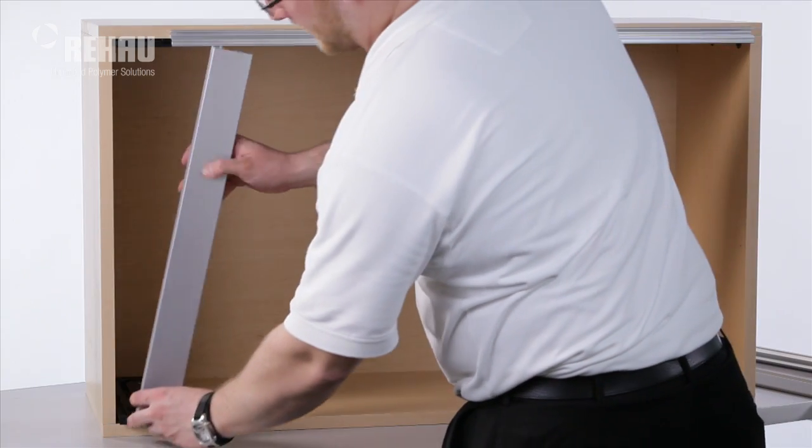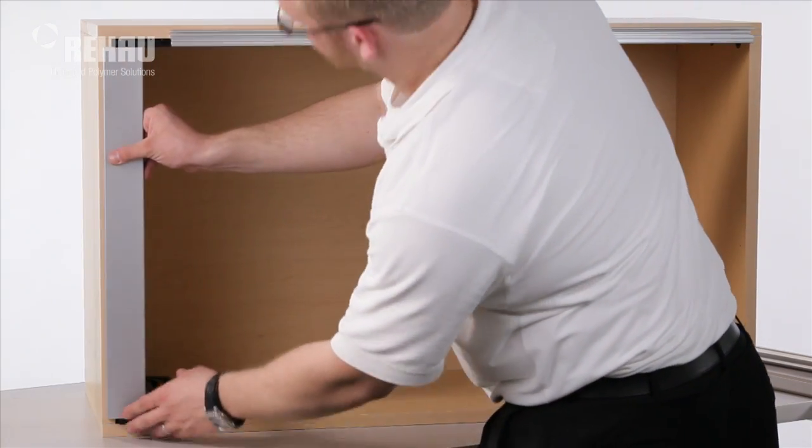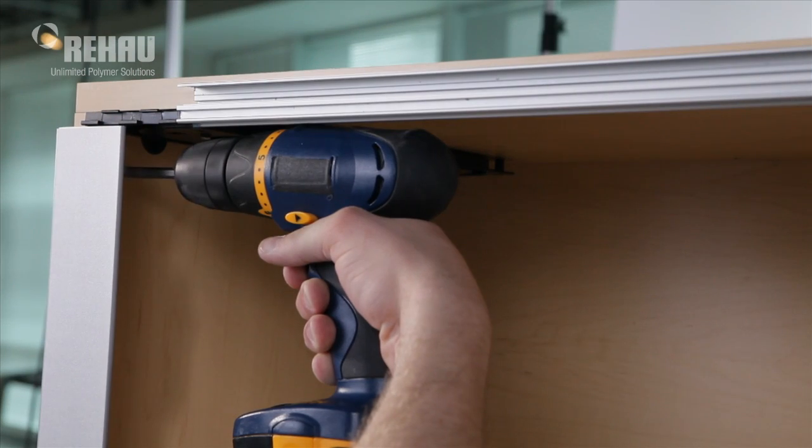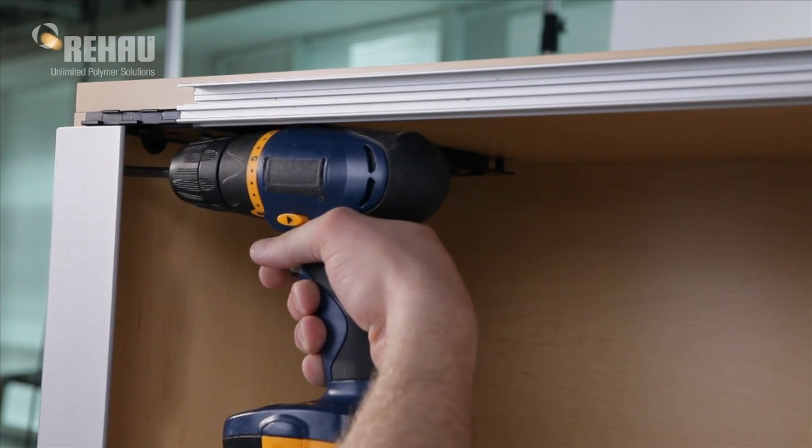Install the door cover profile on the side of the cabinet. Align the cover profile so that the spiral tracks remain exposed. Fasten with screws.